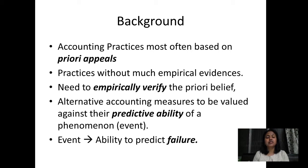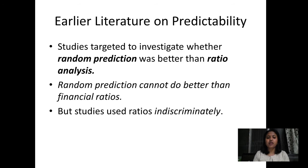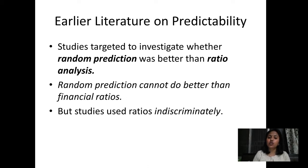Beaver was concerned that accounting measures should be checked for their predictive ability — specifically, the chances of failure. He explored existing literature and found that most studies concluded financial ratios are better predictors than random prediction, but those earlier studies used ratios indiscriminately, without knowing whether those ratios truly had predictive power.